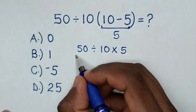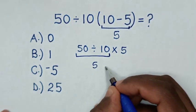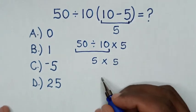Then we'll deal with this first operation. 50 divided by 10 is 5. Then times 5. So, 5 times 5 is 25.